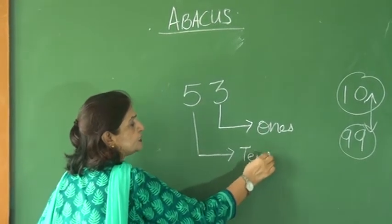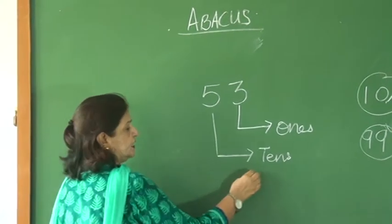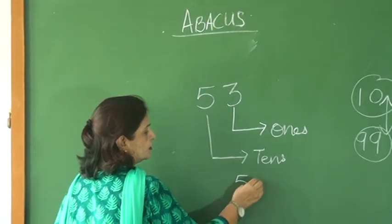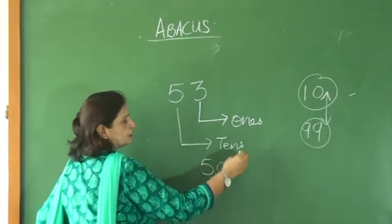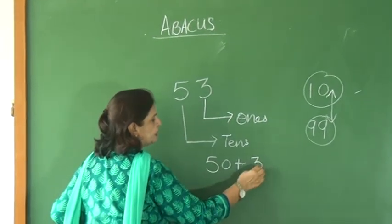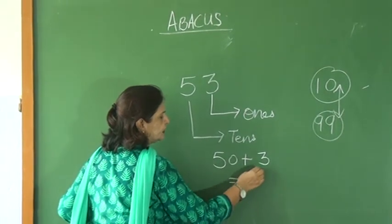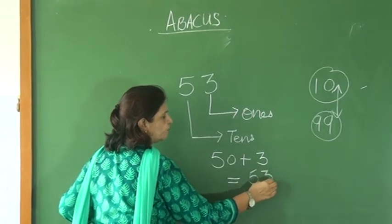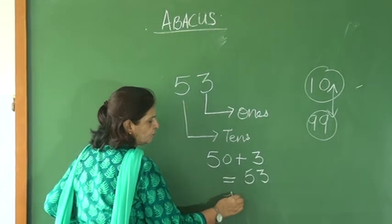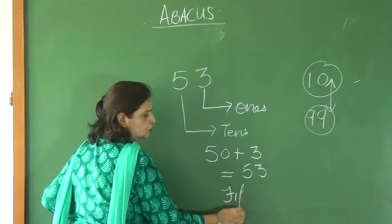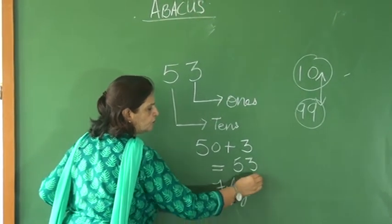That means 5 tens, you call it 50. And 3 ones, you write 3. When we add it, it is 53. And we have to write their number name also.